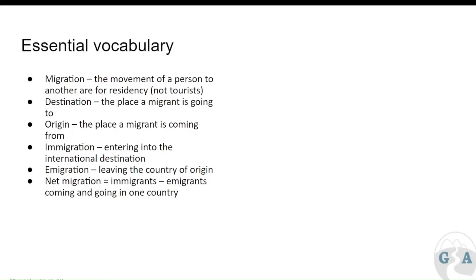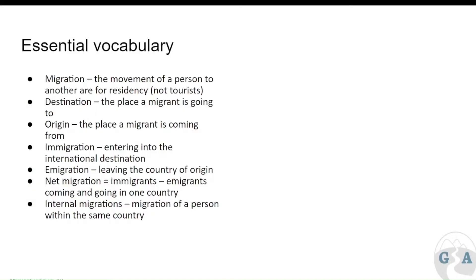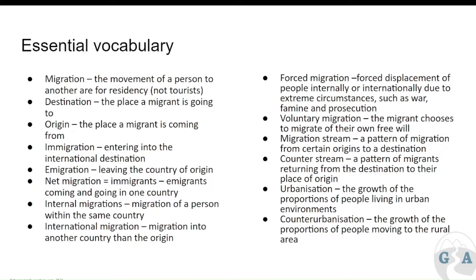Net migration is the amount of immigrants minus emigrants coming and going to one country. So you could have a positive number of people coming in versus people leaving, and that will increase your population. Internal migration is the migration of a person inside the country — for example, from a rural area to an urban area. International migration is movement to another country. So those are the different types and how we would describe them.